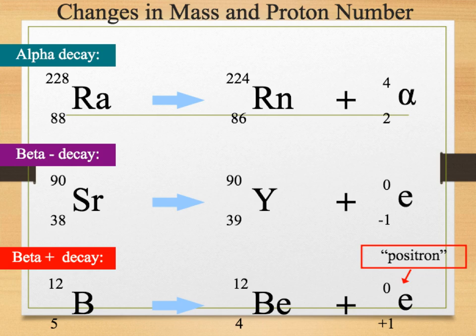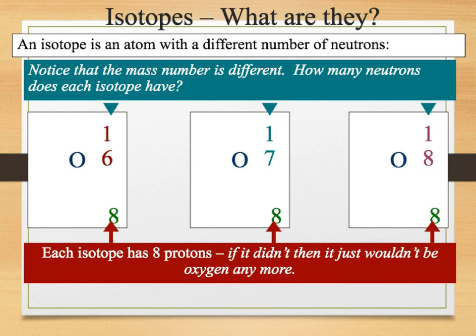We can use this information to look at the probability of an isotope going through radioactive decay. An isotope is an atom with a different number of neutrons. For example, oxygen-16, oxygen-17, and oxygen-18 each have 8 protons, but differ in mass number: oxygen-16 has 8 neutrons, oxygen-17 has 9 neutrons, and oxygen-18 has 10 neutrons. To work out the number of neutrons, we take the mass number and subtract the proton number.